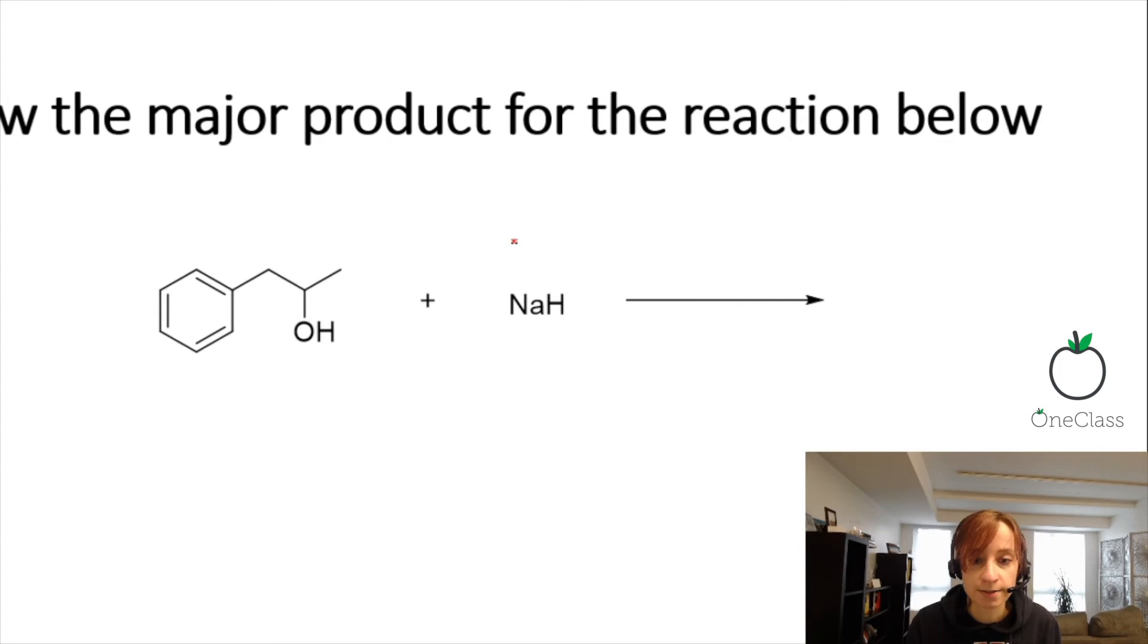So NaH is not covalently bound, they are ionic. So it is Na plus and H minus is the way it can be written. I'm going to draw this out a little bit further. So this is OH, really draw out that bond.